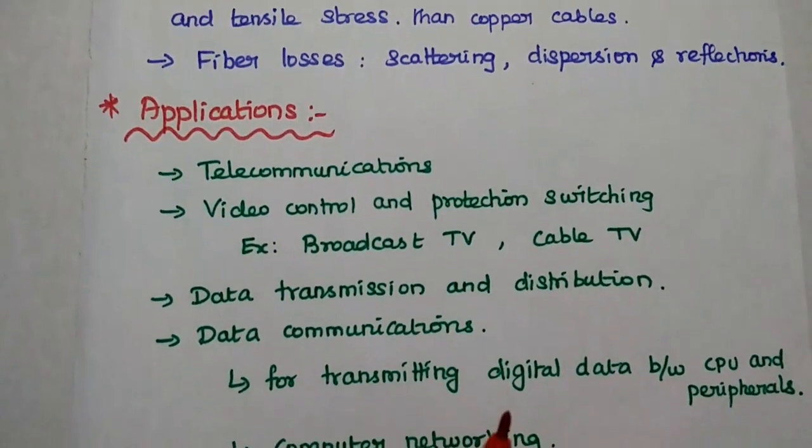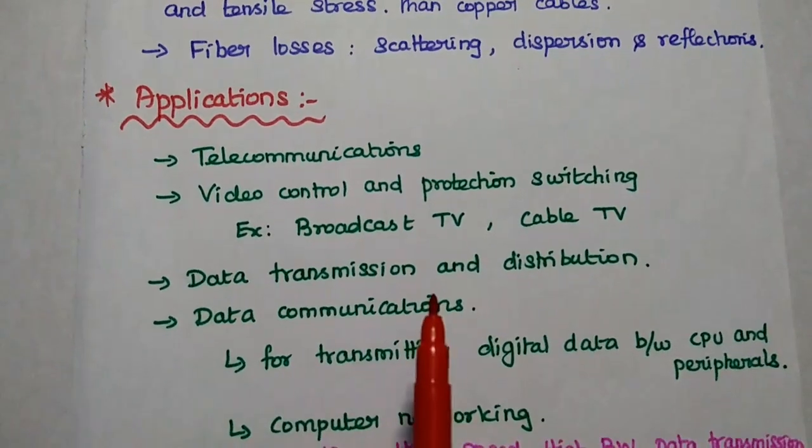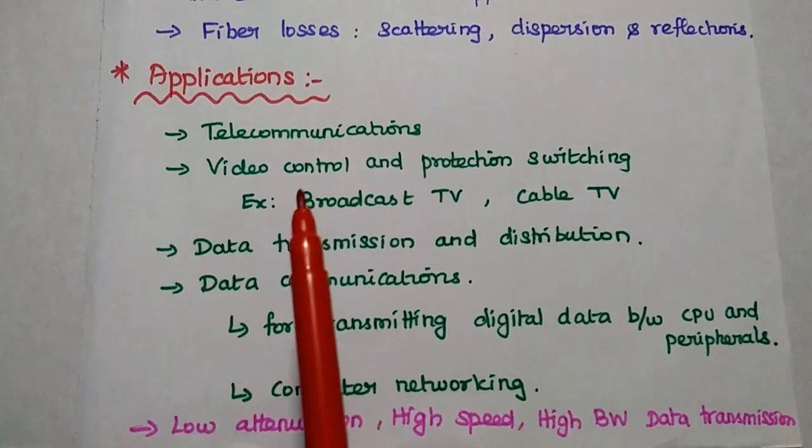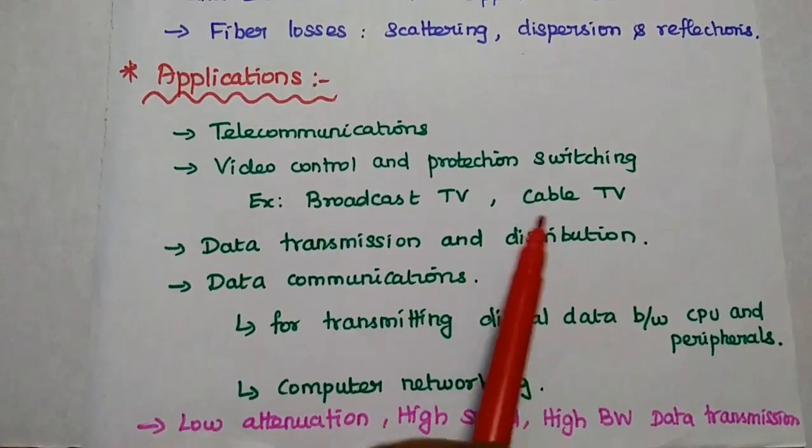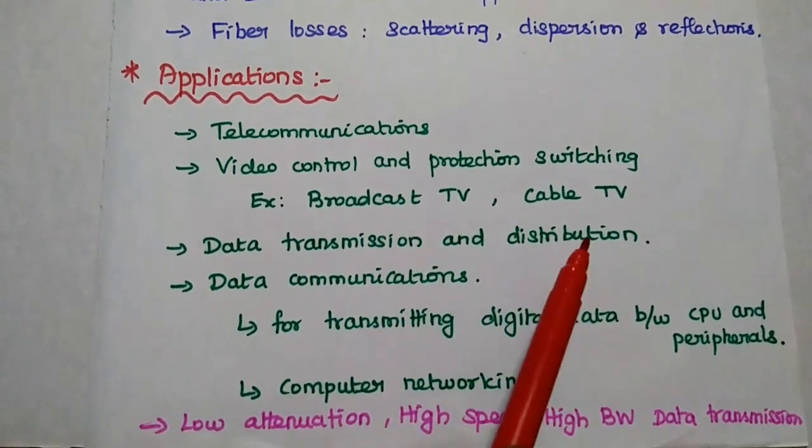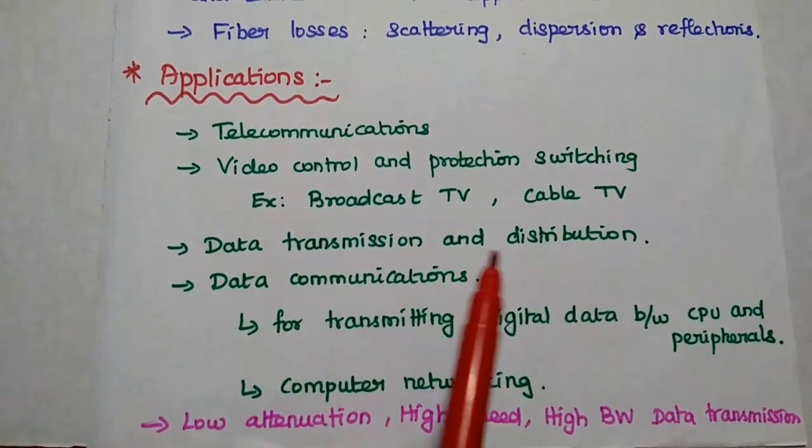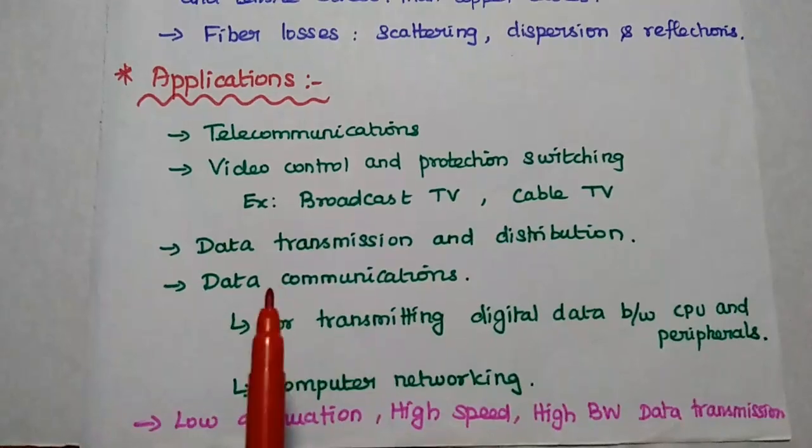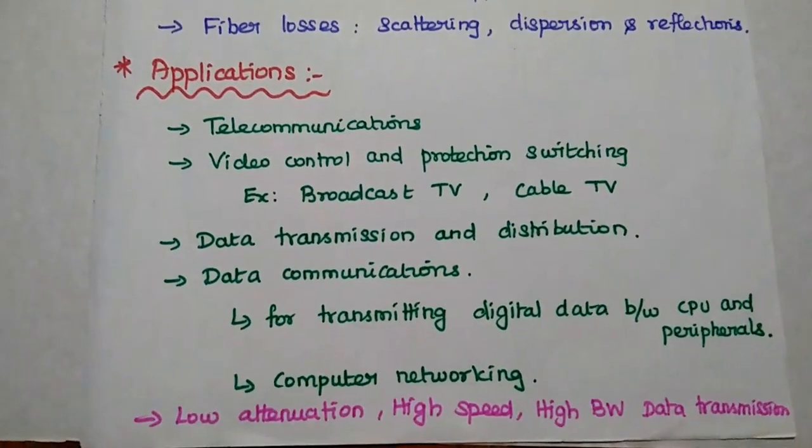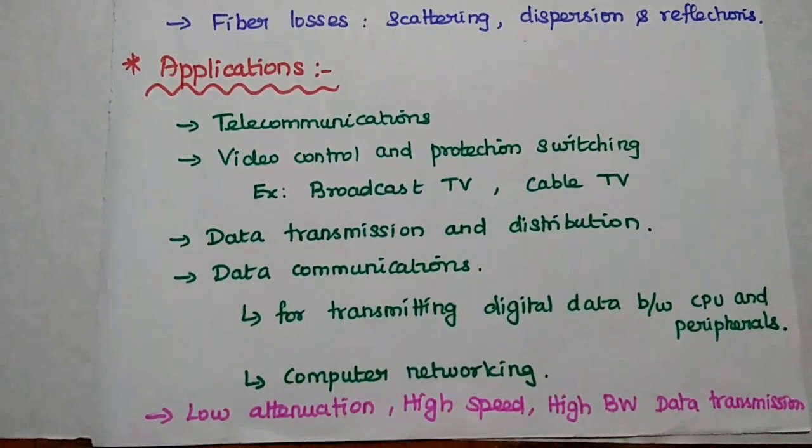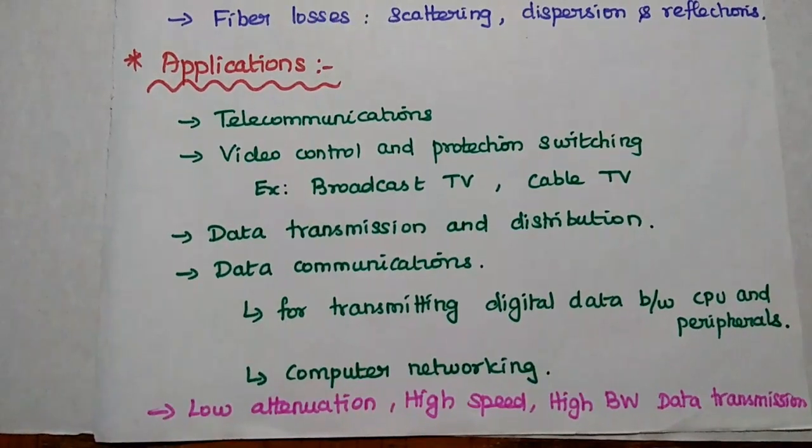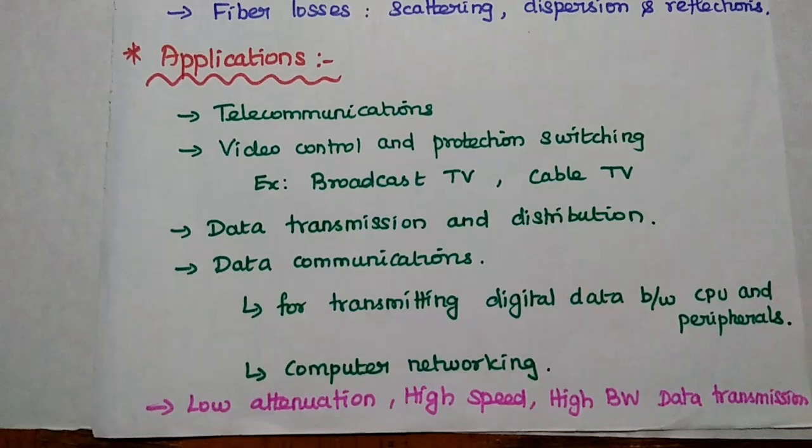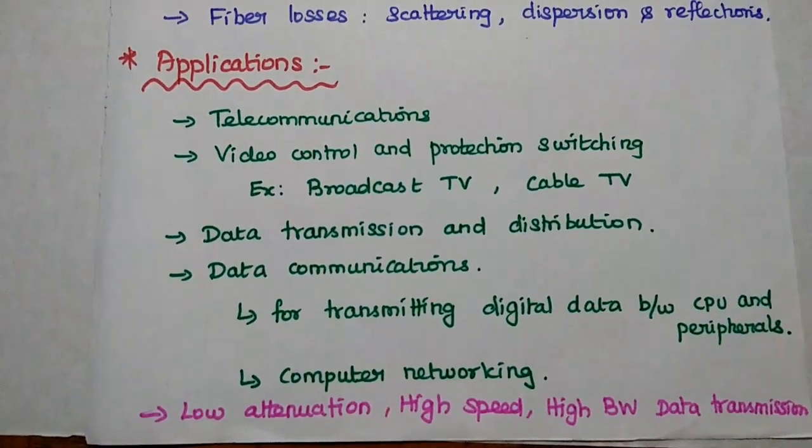Next one is applications. This optical communication system is widely used in telecommunications, video control and production switching unit. Example, broadcast TV, cable TV, data transmission and distribution. For example, text, audio or video. All the data can be transmitted and distributed using this fiber cable with high speed. Next one is data communications for transmitting digital data between CPU and peripherals and then computer networking.